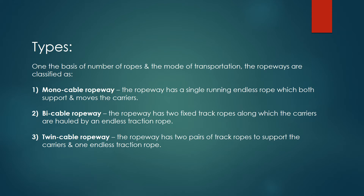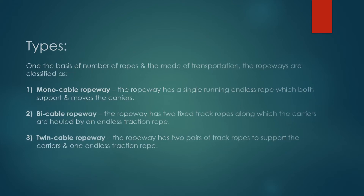Bicable Ropeway — the ropeway has two fixed track ropes along which the carriers are hauled by an endless traction rope. Twincable Ropeway — the ropeway has two pairs of track ropes to support the carriers and one endless traction rope.